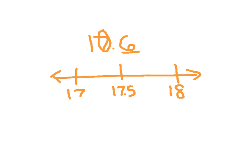17 and 6 tenths, if we were to place this on the number line, would appear right about here. 17 and 6 tenths is closer to 18 than it is to 17. In fact, all of our tenths place numbers that would go to 18 would be 17.5, 17.6, 17.7, 17.8, and 17.9, whereas 17.3 would be closer to 17 than to 18. So 17 and 6 tenths is closer to 18 and rounds to 18.